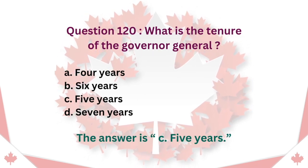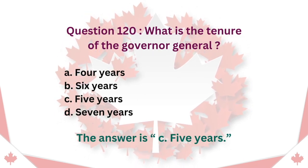Question 120: What is the tenure of the Governor General? A. Four years. B. Six years. C. Five years. D. Seven years. The answer is C. Five years.